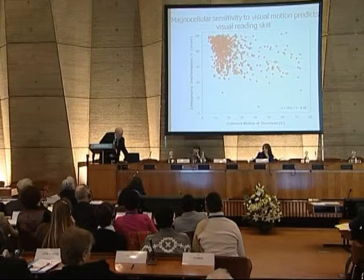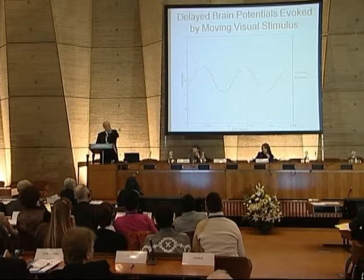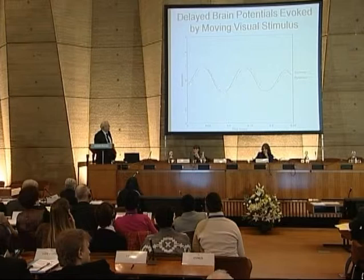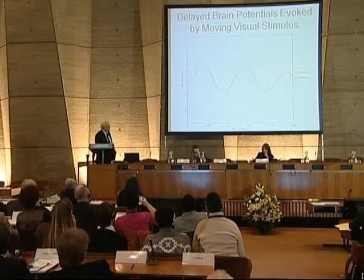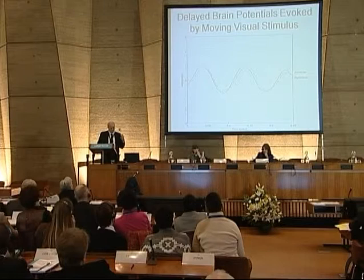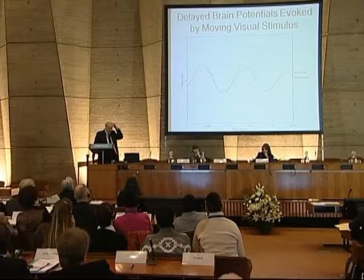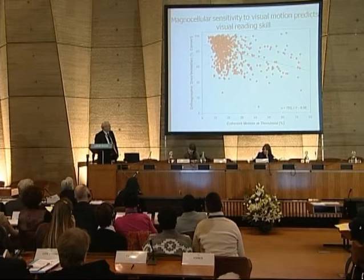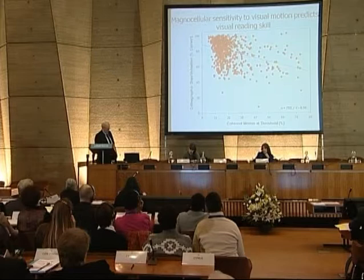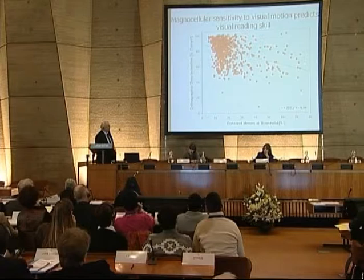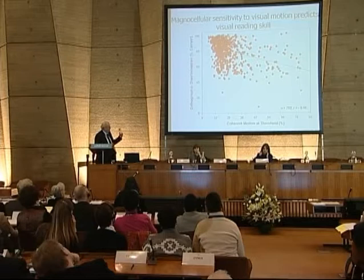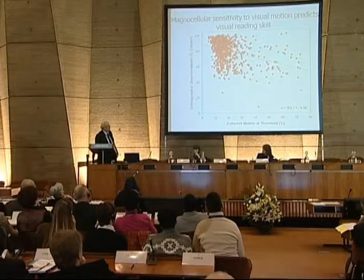We've done work with visual evoked potentials, moving a target in front of the subject and picking up the arrival of the message in the visual cortex. In good readers, the message arrives some 10 to 20 milliseconds earlier than in poor readers — and that difference adds up to about 200 milliseconds further along, a fifth of a second difference from impaired magnocellular development. We can also measure motion sensitivity as a proxy for magnocellular sensitivity: the worse your motion sensitivity, the worse your magnocellular function, and the worse your reading.